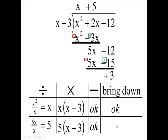There's nothing to bring down now, so we're going to take 3 over this x minus 3. So my answer is x plus 5 plus the remainder of 3 over x minus 3.